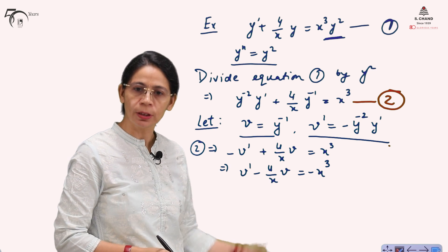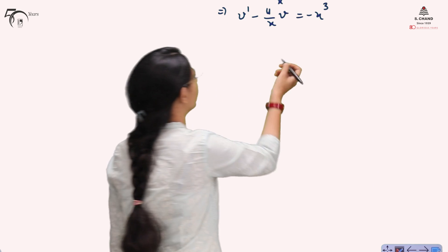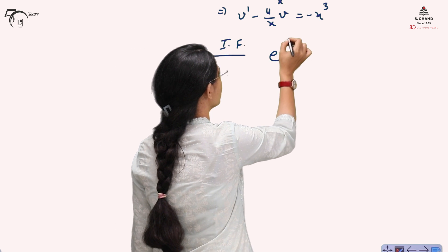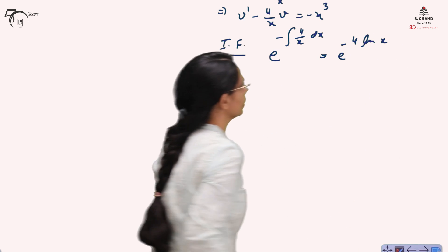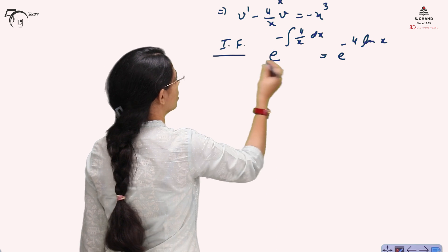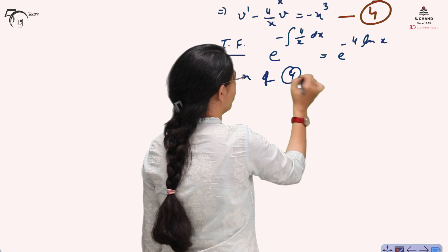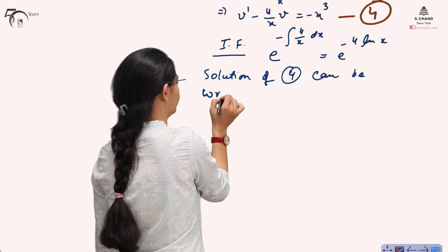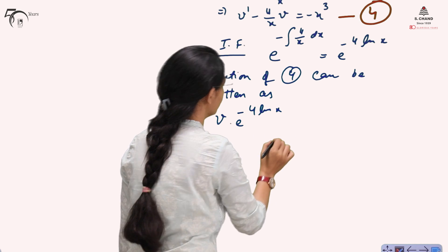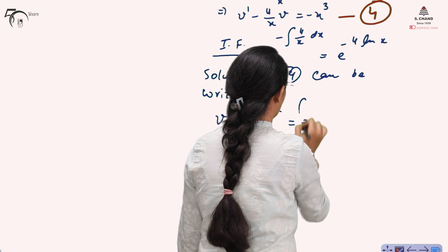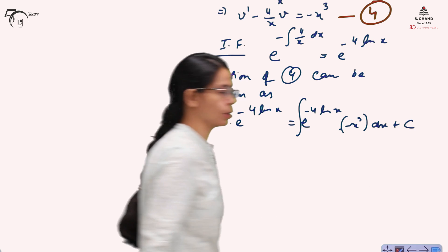This can be solved by the integrating factor technique. The integrating factor is e^(∫-4/x dx) = e^(-4 ln x). The solution of the equation can be written as: v · e^(-4 ln x) = ∫ e^(-4 ln x) · (-x³) dx + C.